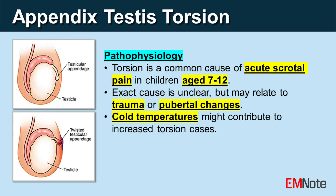The appendix testis, being attached to the testicle, is prone to twisting. Seasonal variations, such as cold temperatures during winter, have also been suggested as a potential contributing factor to increased cases of torsion.